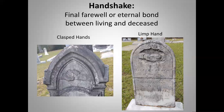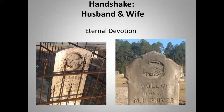Handshakes between a husband and wife typically mean eternal devotion. You have to look carefully at the sleeves — one has a very straight sleeve while the other has small frills. The female's sleeve might be more fluffed out. The wife is typically always on the left where the husband's hand is on the right. In this example, the husband's sleeve has a button on it and the wife's sleeve has little frills or lace.